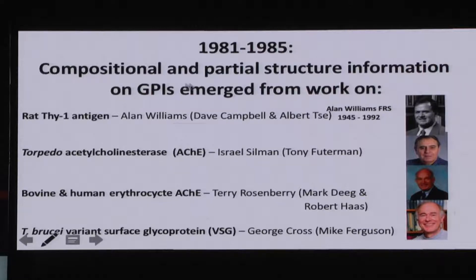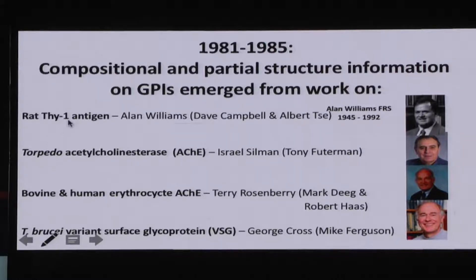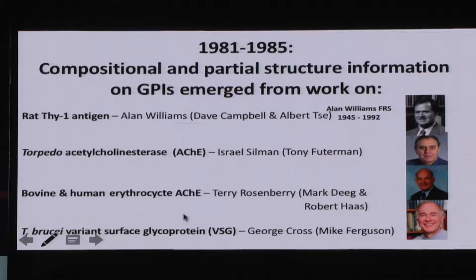There was a key period between 1981 and 1985 when a number of different groups published work that led up to the structural discovery of GPIs: Alan Williams' group on rat Thy-1, Israel Silman on torpedo acetylcholinesterase, Terry Rosenberry's group on bovine and human erythrocyte acetylcholinesterase, and George Cross's group on Trypanosoma brucei variant surface glycoprotein — that was the work I did as a postdoc.